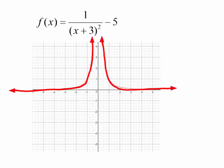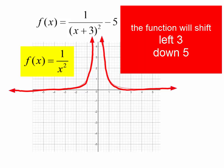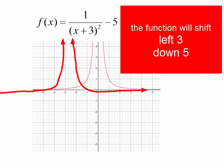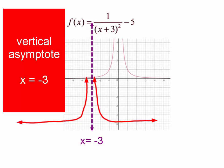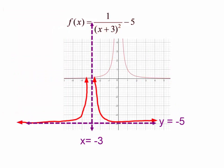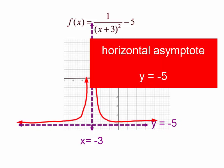Let's graph f(x) = 1 over (x+3) squared minus 5. We have two shifts here. This does begin as a graph of 1 over x squared, but I am going to shift this function to the left 3 and down 5. You should see that I have a new vertical asymptote: x equals negative 3. When is that denominator going to equal 0? Yes, when x is negative 3. I have a new horizontal asymptote at y equals negative 5.